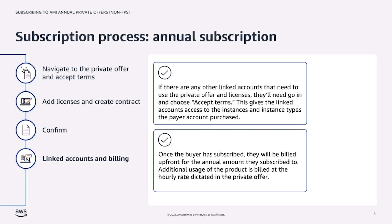Once the buyer has subscribed, they will be billed upfront for the annual amount they subscribed to. Any additional usage of the product is billed at the hourly rate dictated in the private offer and invoiced on the third of the following month.